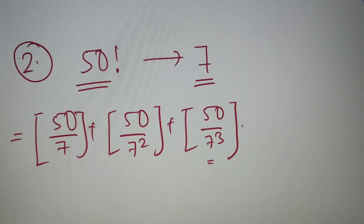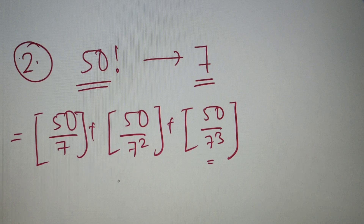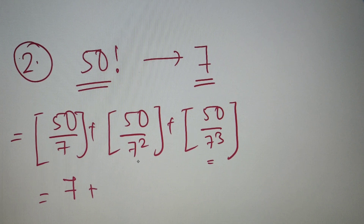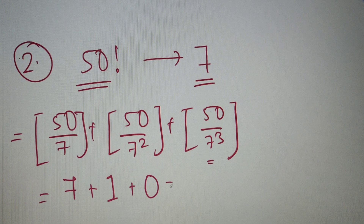If you are not familiar with this concept, I have made a separate video on this topic, so you can watch that first and then come back. Moving back to our question, we find the sum of these three values. 50 divided by 7 gives 7 point something, so the greatest integer value is 7. 50 divided by 49 gives 1 point something, so we get 1. 50 divided by 7³ gives 0 point something, so we get 0. The sum of 7, 1, and 0 is 8, so the number of trailing zeros of 50! in base 7 is equal to 8.